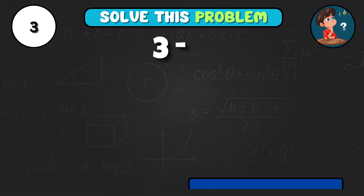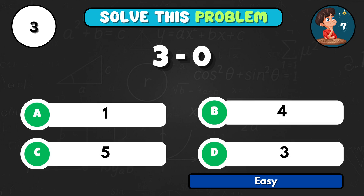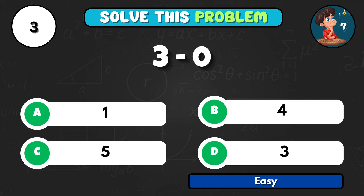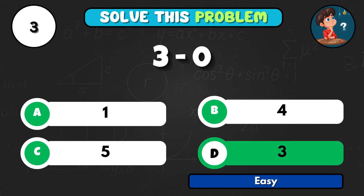3 minus 0 equals what number? The right answer is D3.